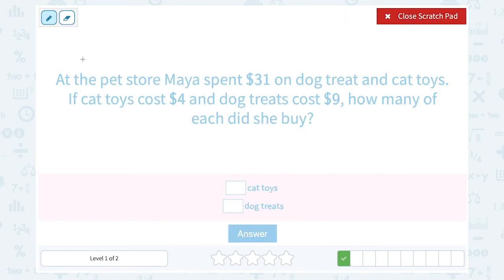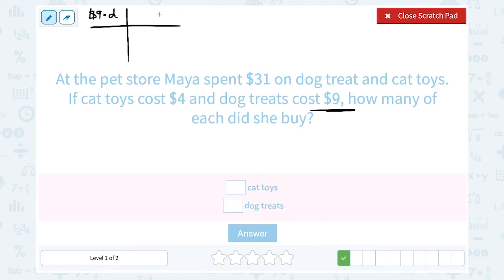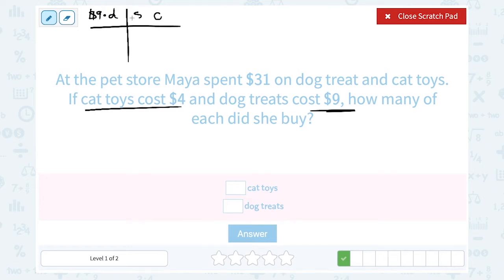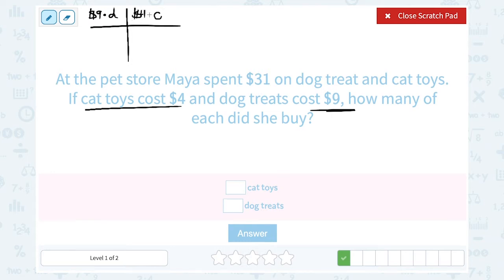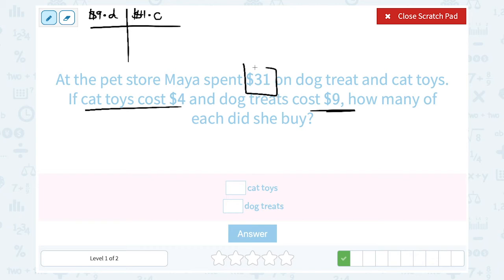Let's make a guess here. So let's say we're going to guess how many dog treats. Notice the dog treats were $9 each, so I'm going to put $9 times whatever our guess is for dog treats. And we're also going to guess how many cat treats she bought. Cat toys were $4 each. So we're going to multiply $4 times whatever our guess is for the number of cat toys. And we're trying to make it add up to a total of $31.